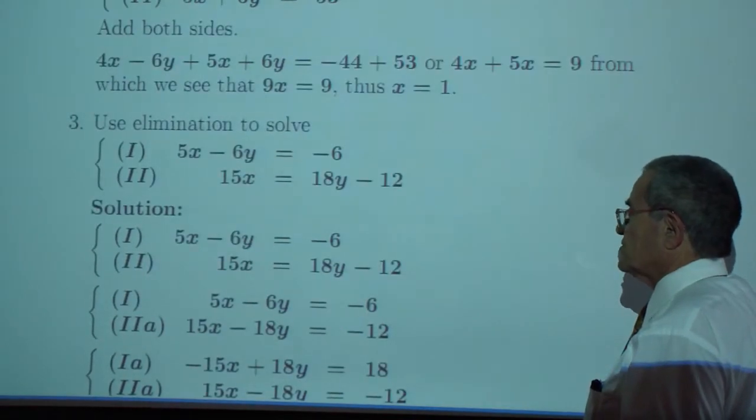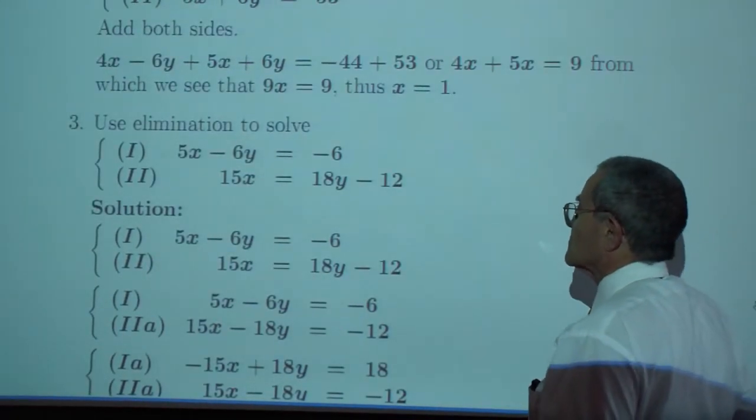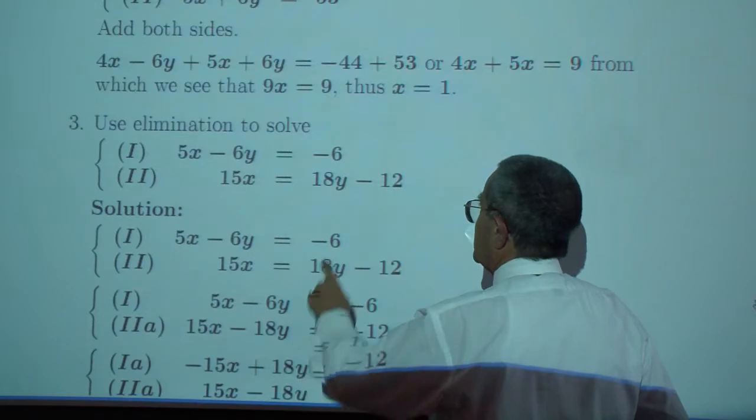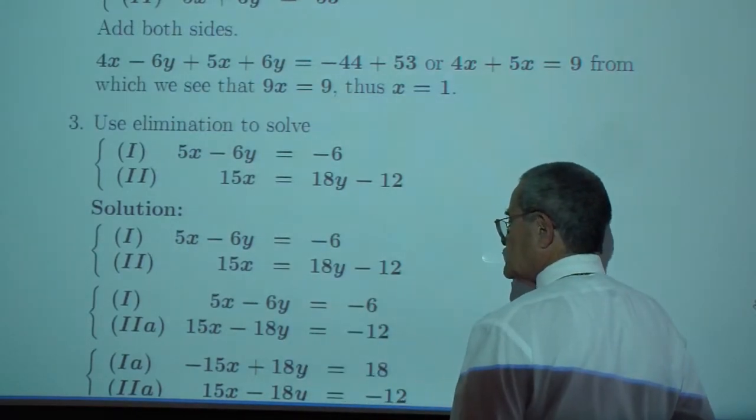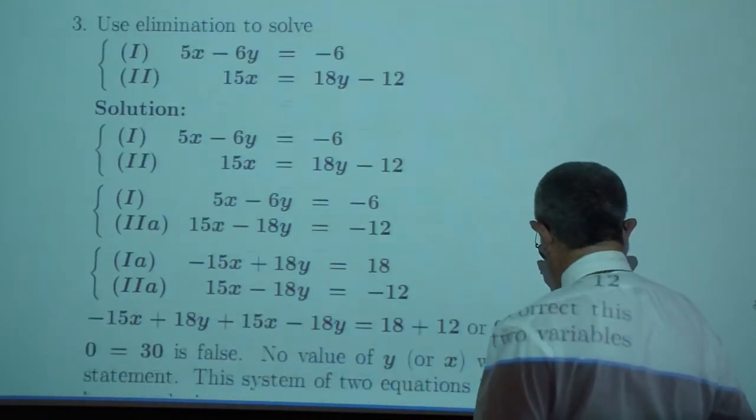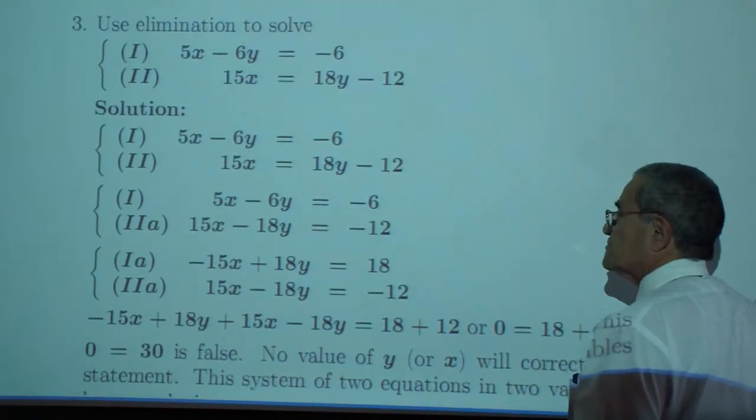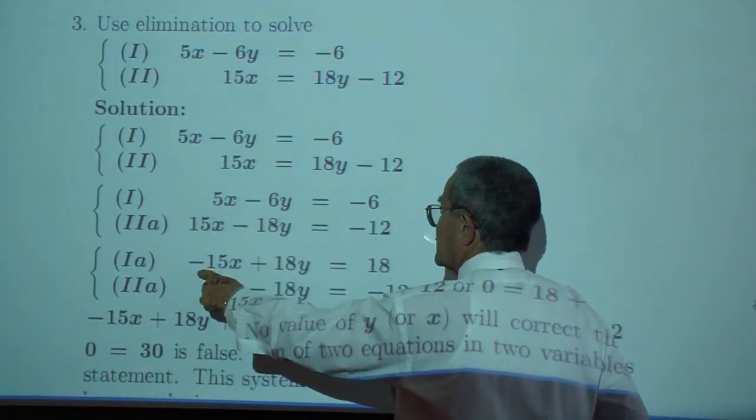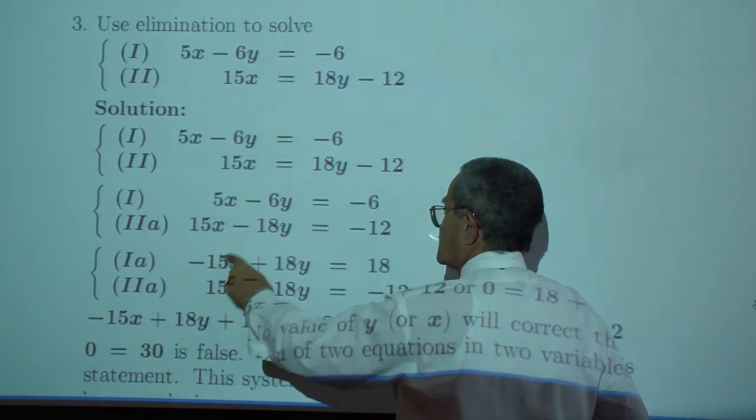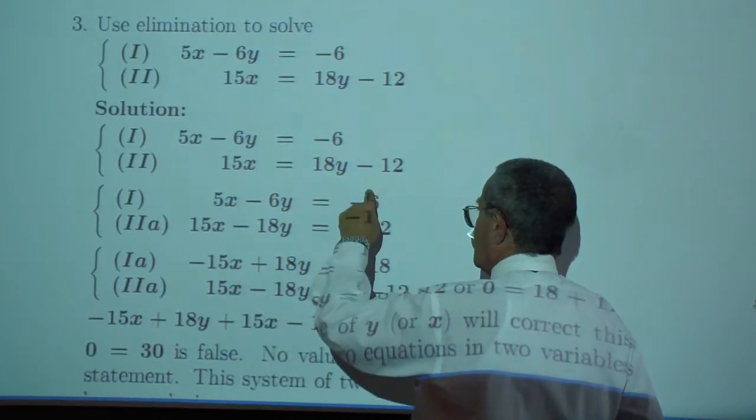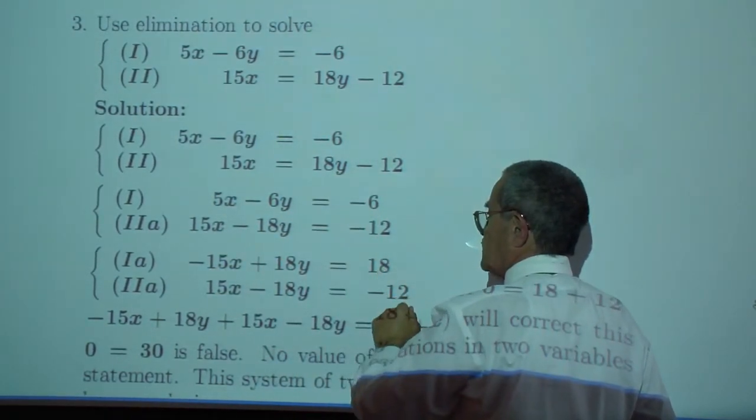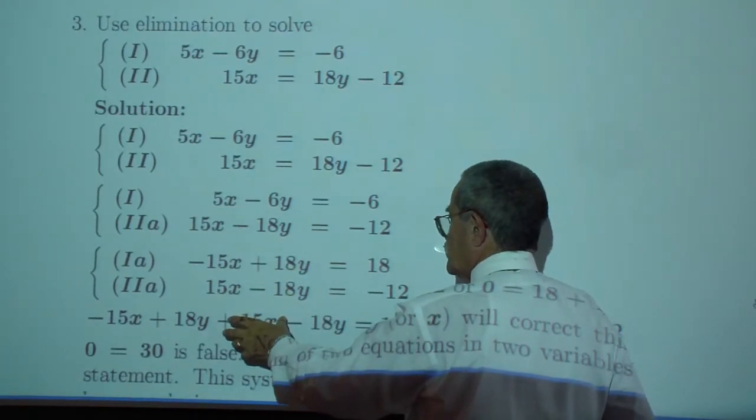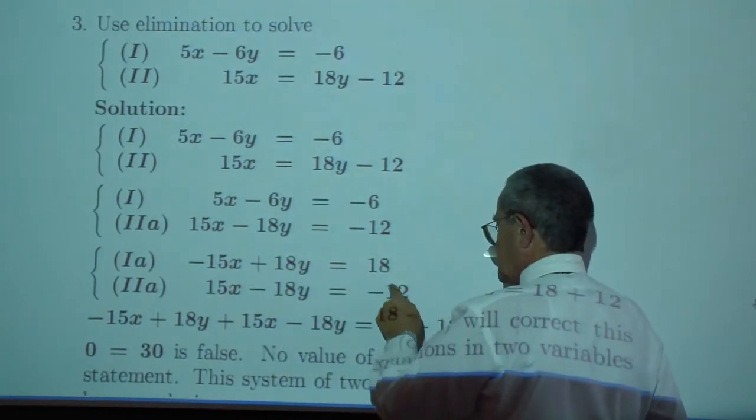Use elimination again. Subtract 18y from both sides. Multiply this equation by negative 3. You get negative 15x plus 18y equals 18. And when you add them, you get 0 equals a non-zero number.